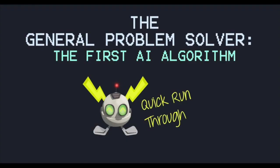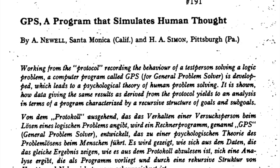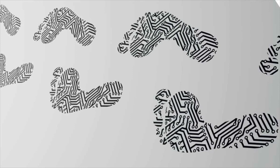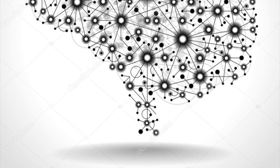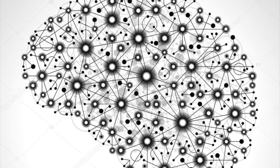For example, Alan Newell and Herbert Simon, who developed GPS, the general problem solver, were not content merely to have their program solve problems correctly. They were more concerned with comparing the trace of its reasoning steps to traces of human subjects solving the same problems.